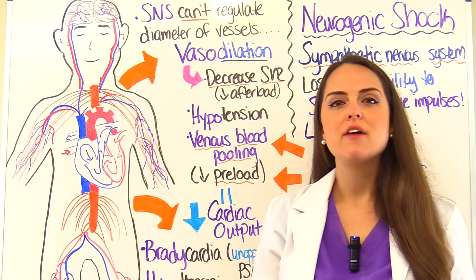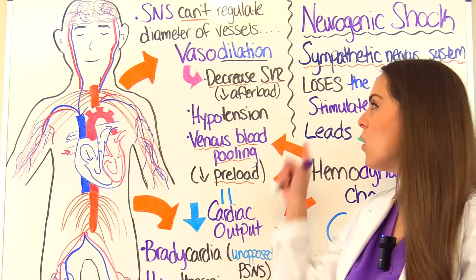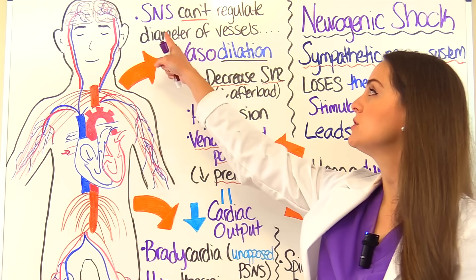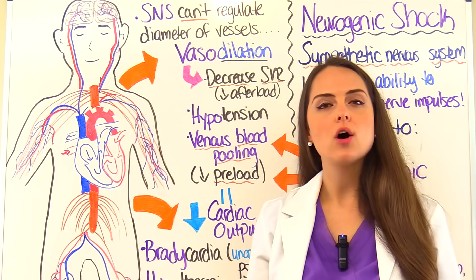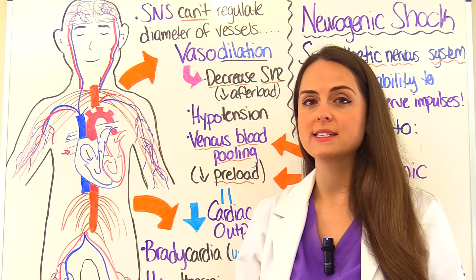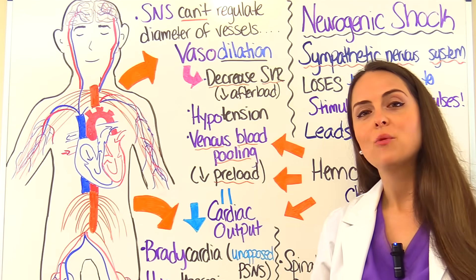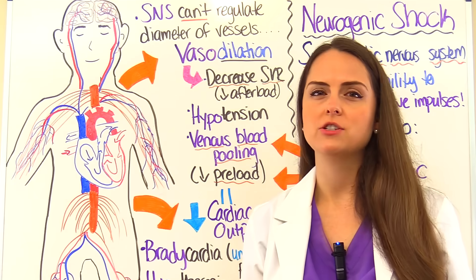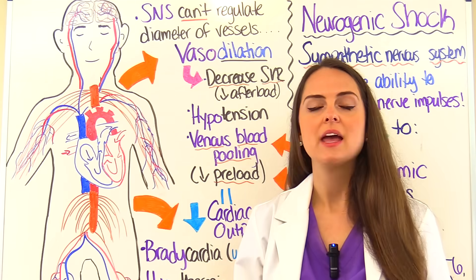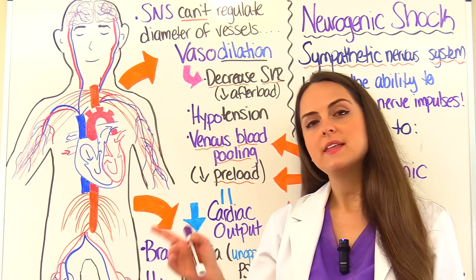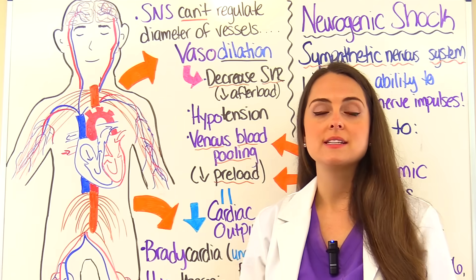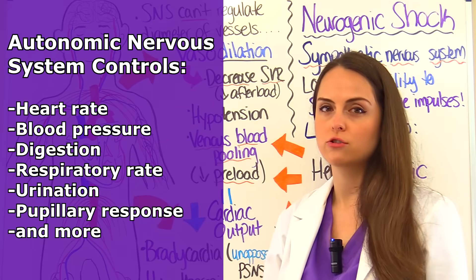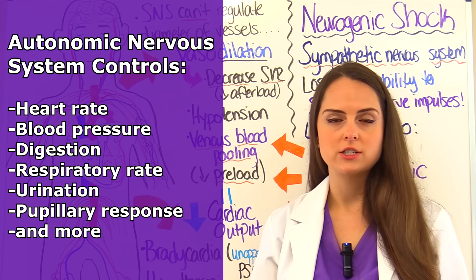Let's talk about the pathophysiology of neurogenic shock. We've established that this is occurring because we have an issue with our sympathetic nervous system — it's lost the ability to stimulate nerve impulses. This is a big problem because we're going to have major hemodynamic changes, since the sympathetic nervous system plays a huge role with blood pressure and how it regulates the diameter of those vessels. The autonomic nervous system controls functions we can't consciously control, like heart rate, blood pressure, and digestion.